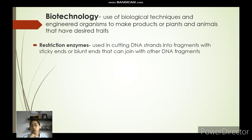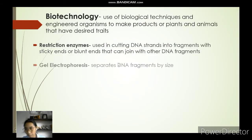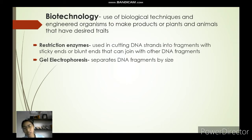Let's look at the processes and different terminologies used in biotechnology, especially in genetic engineering. The first one is the restriction enzyme — these enzymes are used in cutting DNA strands into fragments with sticky ends or blunt ends that can join with other DNA fragments. The second term is gel electrophoresis, which is the process used to separate DNA fragments by size.